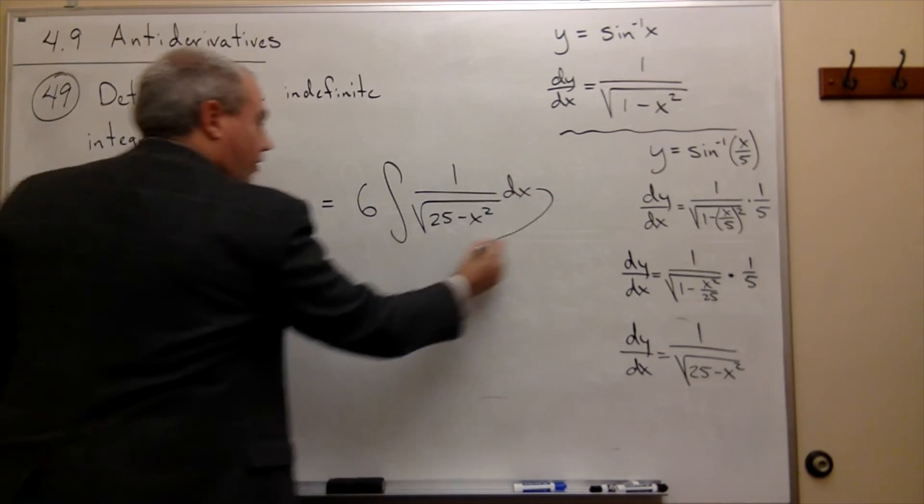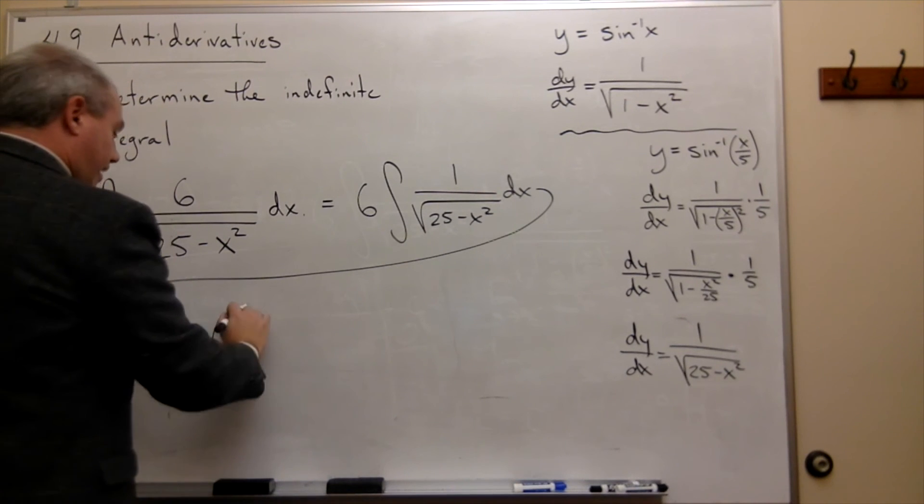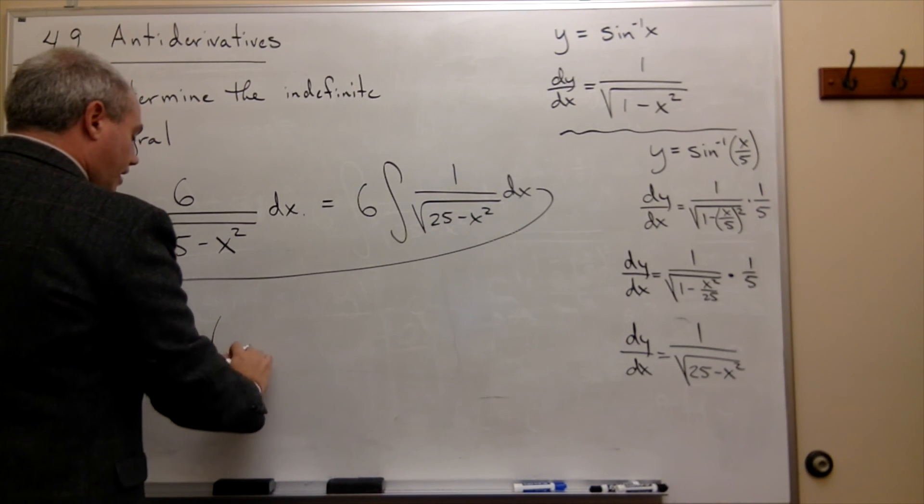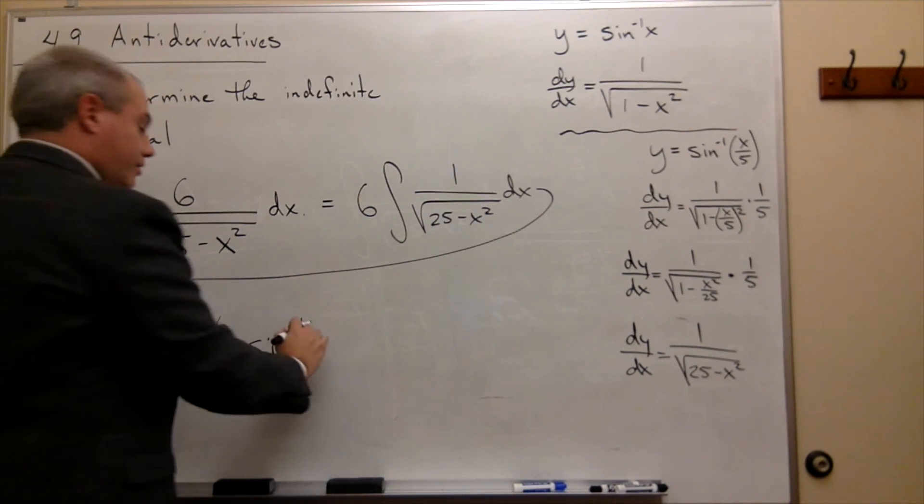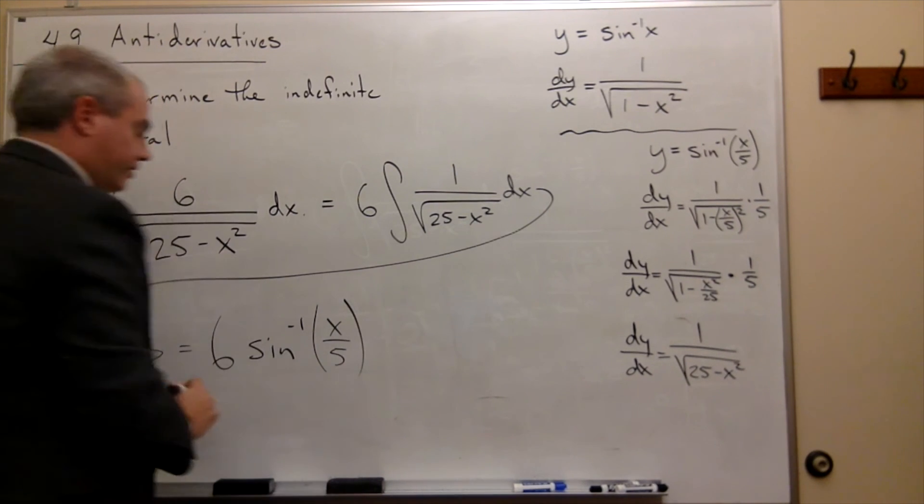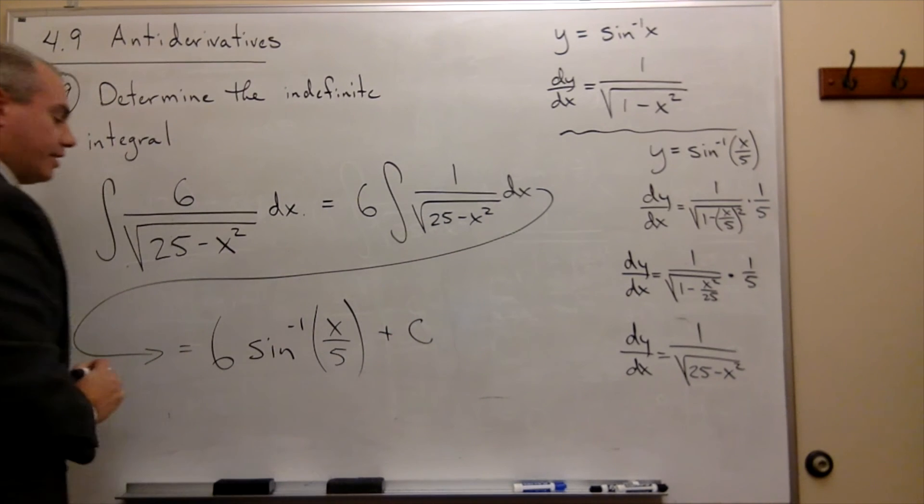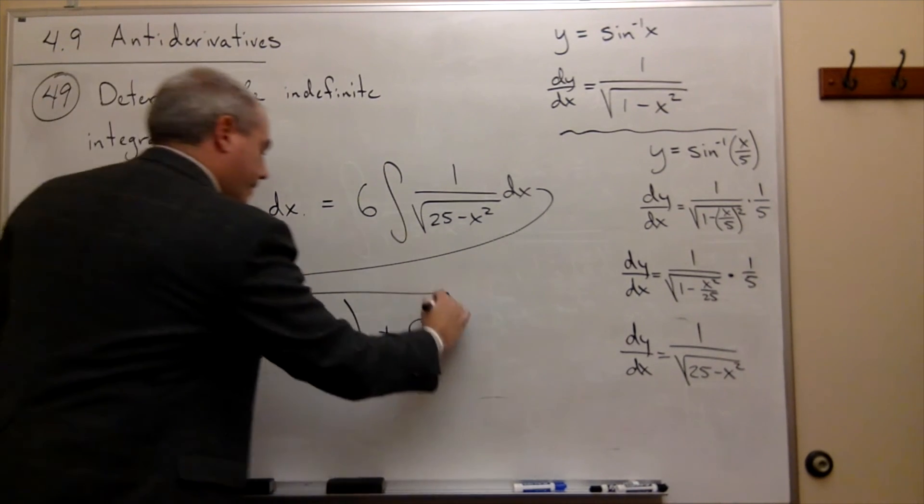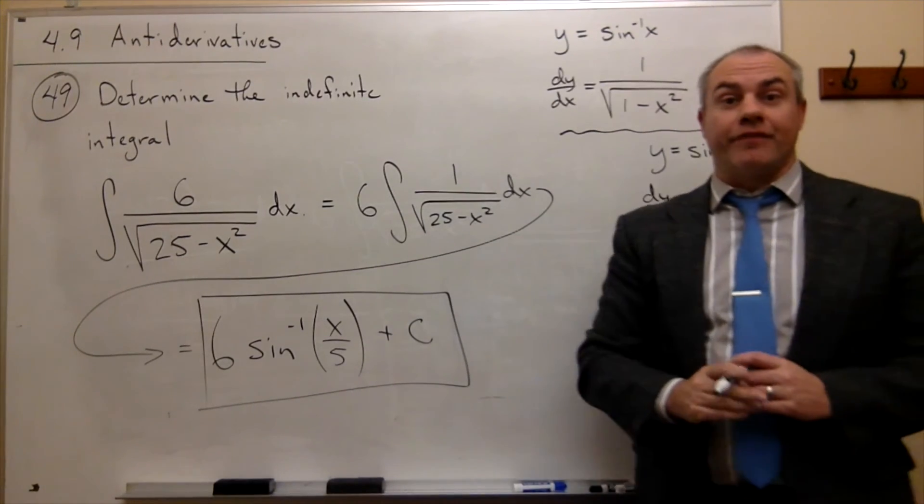So what we get here, remember, now we're back here, this is equal to 6 times sine inverse of x over 5. And then we need to add on our constant of integration. And that will be our antiderivative.